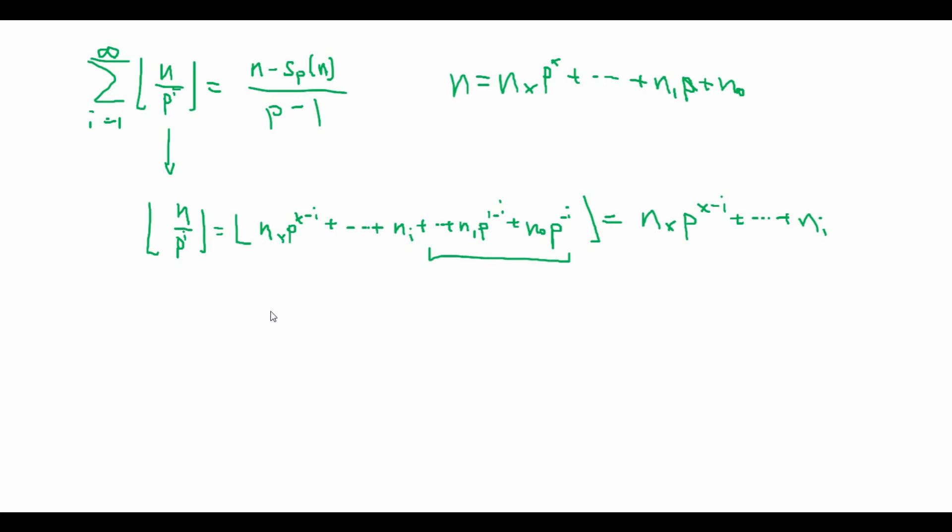So if we do this, we basically find that for each n sub x, we have the terms p to the x minus 1, or I'll call this k, p^(k-1) plus p^(k-2) plus all the way to plus p plus 1 from the summation, and this is just equal to n sub k times p to the k minus 1 over p minus 1, right? Which is just equal to n_k p^k minus n_k over p minus 1, and I take the sum of this.